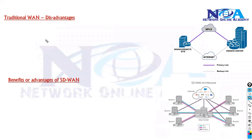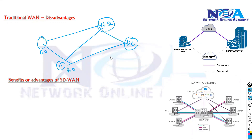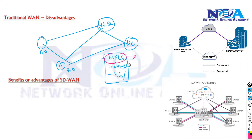With traditional WAN, we have branch offices that we connect to the head office and data center. We connect these sites using MPLS, internet, or 4G as backup links. Most of the time, the most popular technology we use is MPLS, which provides high-speed data transfer rates, generally provided by service partners.